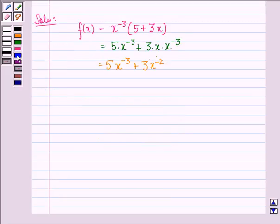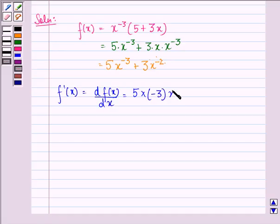Now we have to find f'(x). So f'(x) is the derivative of f(x) with respect to x, that will be equal to 5(-3)x^(-3-1) + 3(-2)x^(-2-1).